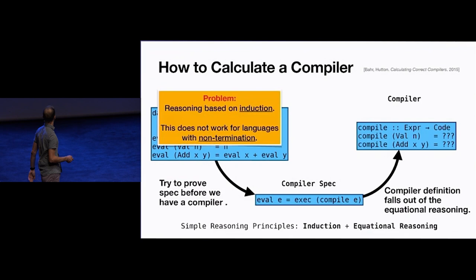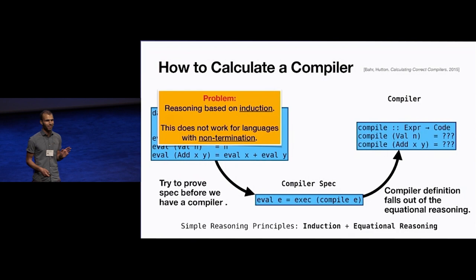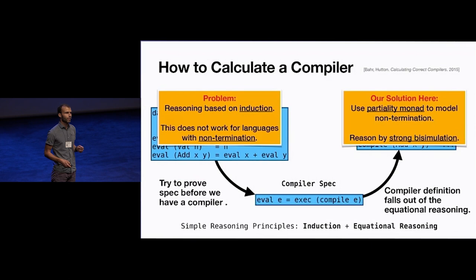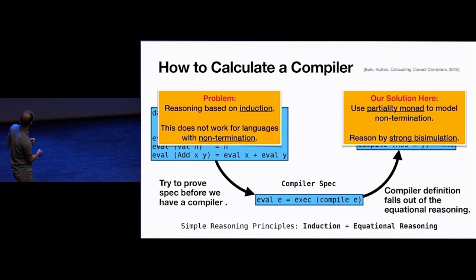This is partly also one of its problems: because we only have induction, this makes it difficult to account for non-termination. So what we do is use a monad to model this diverging behavior, and then use strong bisimilarity instead of equality.